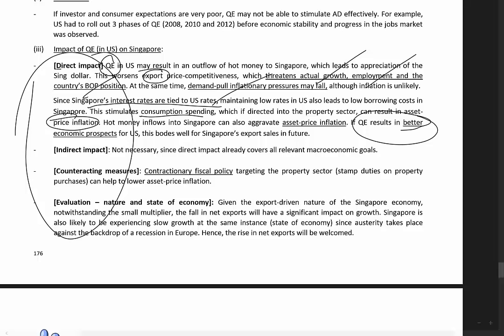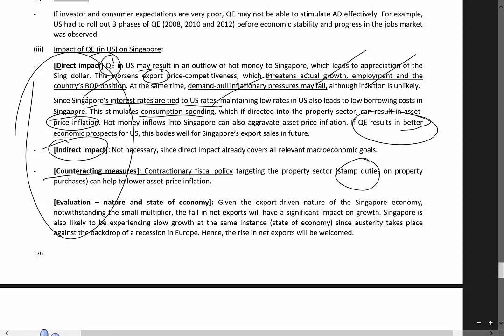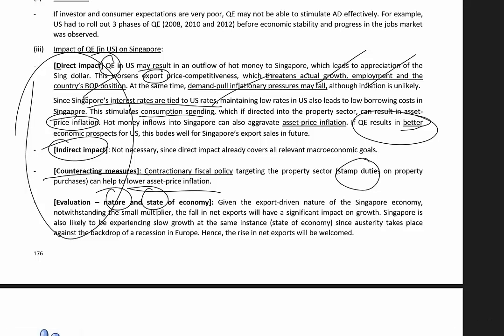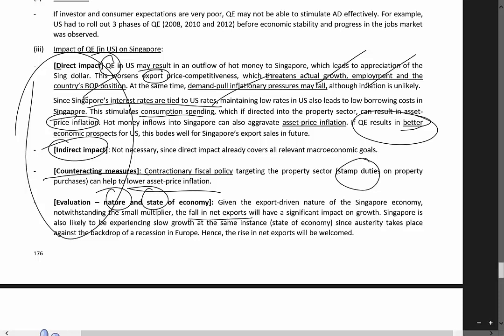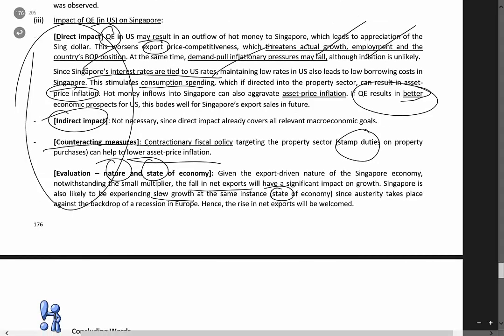If consumption is directed into property investments, asset price inflation rises. But in the long run, if QE improves economic prospects in the US, Singapore's export sales will start to recover. Under the direct impact, all four macroeconomic goals are already covered. As part of DICE we also consider counteracting measures - if QE results in high property prices and asset price inflation, Singapore can increase stamp duties, which are effectively taxes that discourage property investment and help lower asset price inflation.